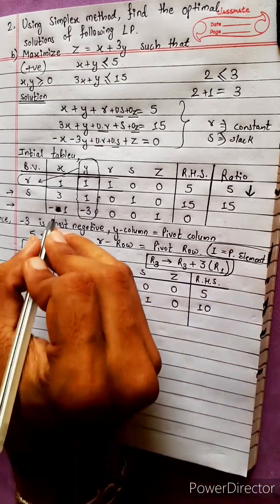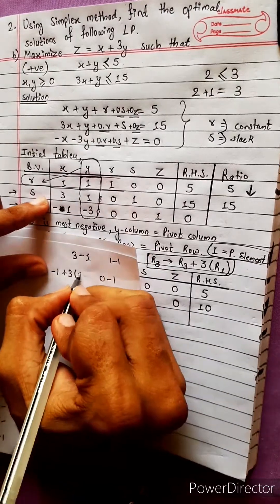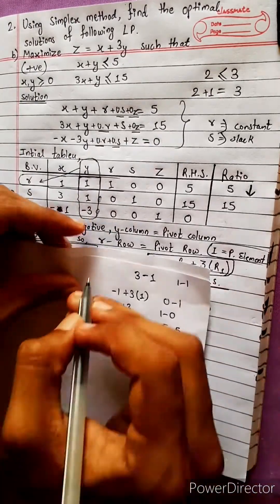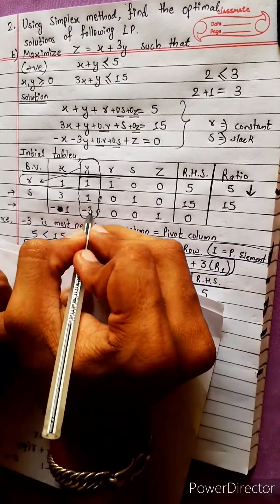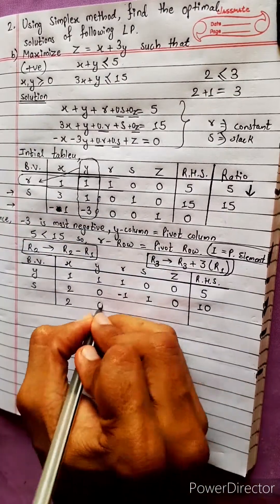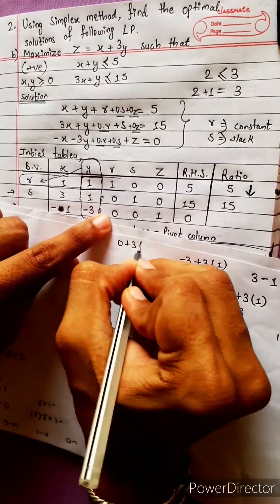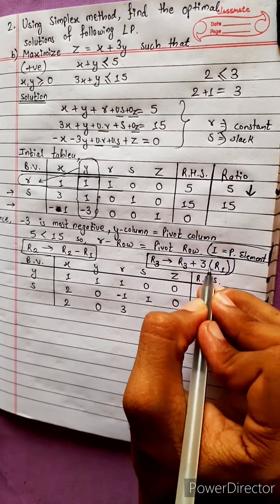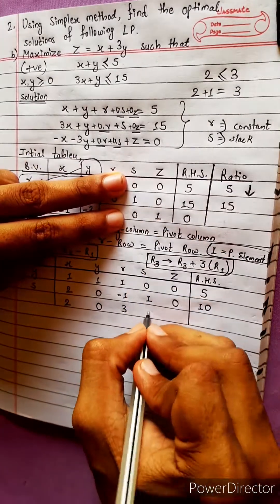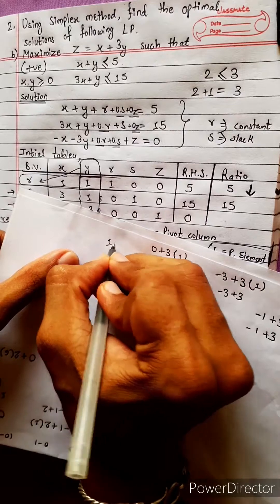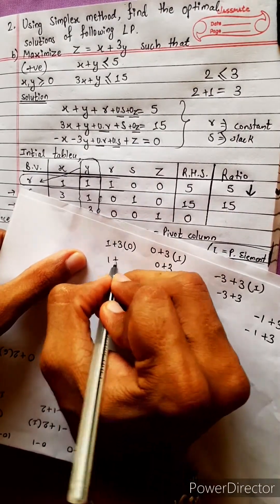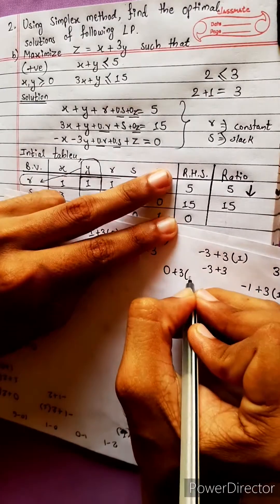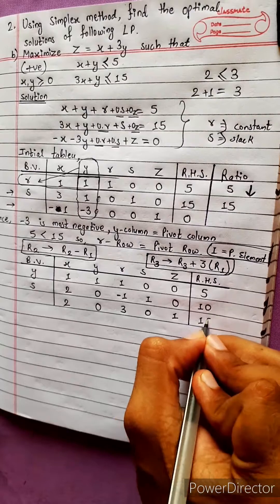For R3, apply R3 plus 3 times R1. R3 + 3×R1: first element: 1 plus 3×1 = 3 plus... wait, minus 1 plus 3×1 = 0 plus 3 = 3. Next: 0 plus 3×1 = 3. Then: 0 plus 3×0 = 0. Then: 1 plus 0 = 1. Then: 1 plus 0 = 1. RHS: 0 plus 3×5 = 15. The third row now has all positive entries.